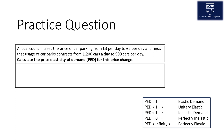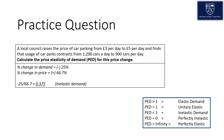Here I have written out a practice question for you to try at home, so feel free to pause the video now and try this for yourself. A local council raises the price of car parking from £3 per day to £5 per day, and finds that the usage of car parks contracts from 1,200 cars daily to 900 cars. The change in demand equals negative 25% because the cars decreased from 1,200 to 900, which equals a 25% decrease. The price change has gone up by 66.7%, which is the percentage increase from £3 to £5.